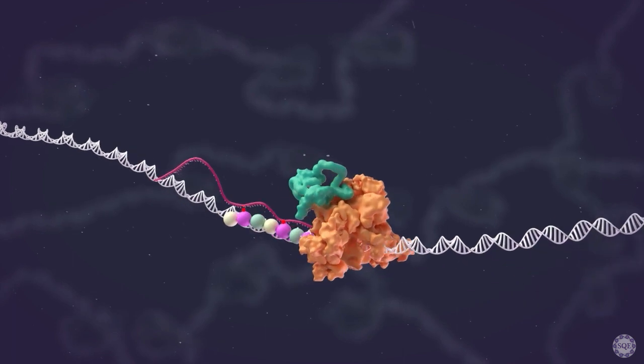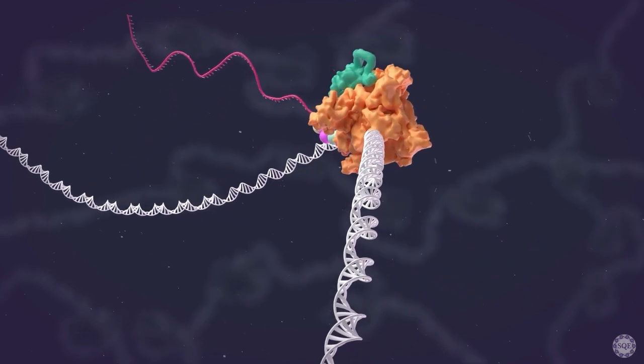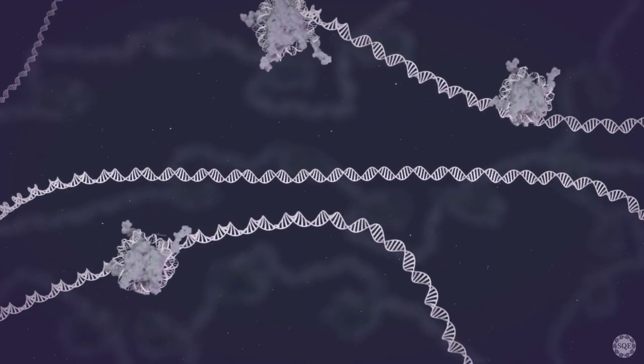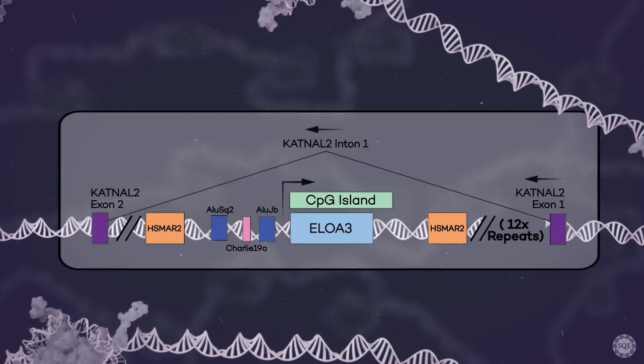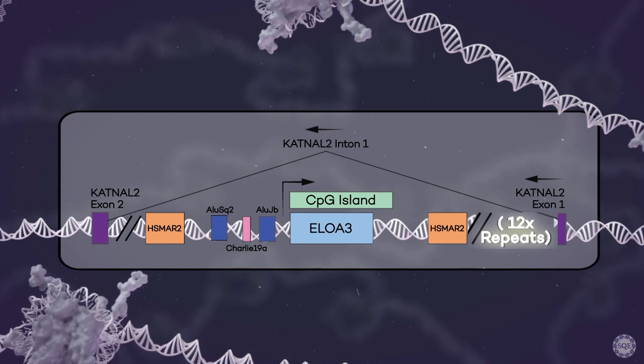These genes were identified through T2T sequencing by Eichler's laboratory. Complete telomere-to-telomere sequencing demonstrated that the ELOA3 gene cluster is conserved among primates, and the number of ELOA3 gene repeats is variable in the human population and across primate species.